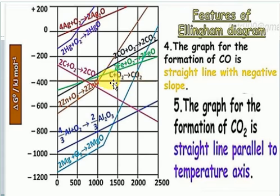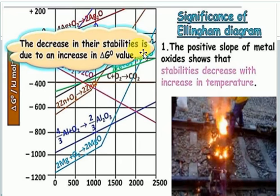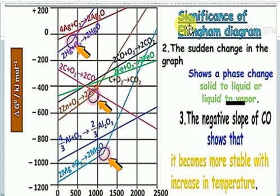When comparing carbon and carbon monoxide as reducing agents, carbon monoxide is better because its ΔG is more negative, making it more feasible. Now for the significance of the Ellingham diagram: the positive slope of a metal oxide graph shows that stability decreases with increasing temperature, due to the increasing ΔG value.